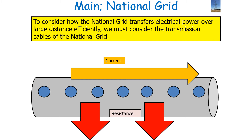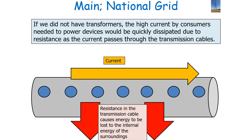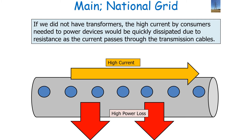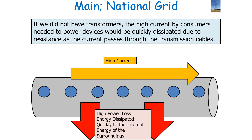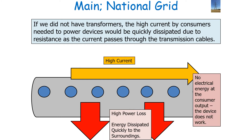As the current passes through the transmission cables, there is a resistance in the actual cable due to the atoms and ions which make up the transmission cable. This resistance causes energy to be lost to the internal energy of the surroundings. A high current would lead to a high power loss, so energy will be quickly dissipated. As a result, no electrical energy will be present at the consumer output, so devices in schools, factories, homes, and shops would not work.